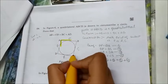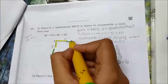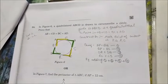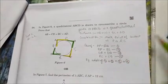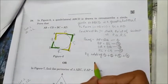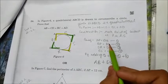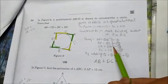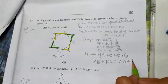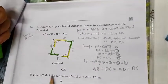From point A, tangents AP = AQ. From point B, BP = BS. From point D, DR = DQ. From point C, CS = CR. Adding all four equations: AP + PB + DR + RC = AQ + DQ + BS + CS, which gives AB + DC = AD + BC. Hence proved.